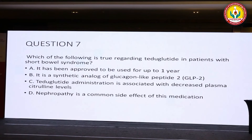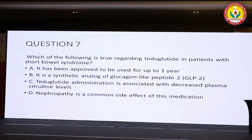Question number 7: which one of the following is true regarding Teduglutide in patients with short bowel syndrome? It has been approved for use for up to one year. It is a synthetic analog of GLP-2. Its administration is associated with decreased plasma citrulline levels. Nephropathy is a common side effect. Select the true statement regarding this drug.